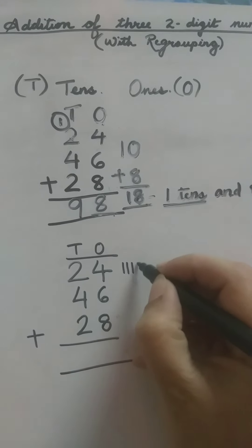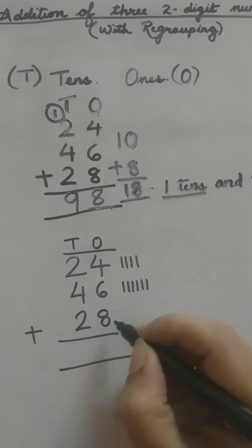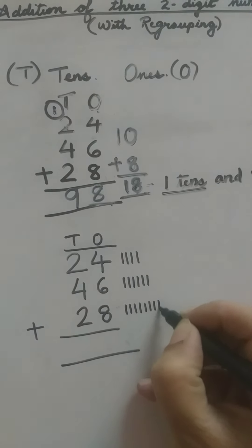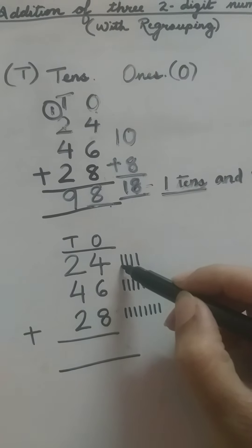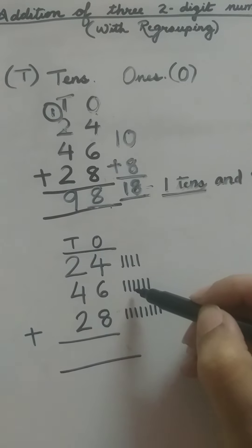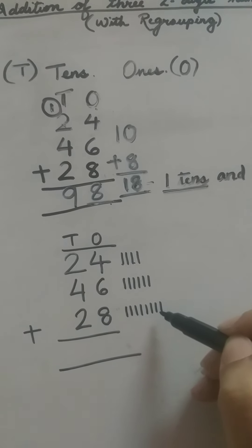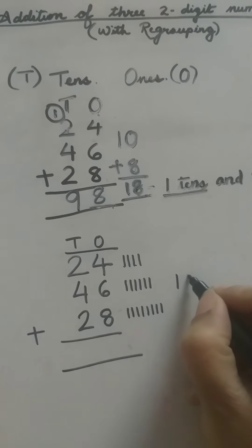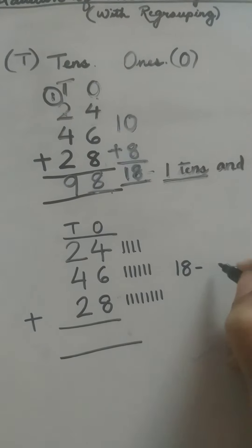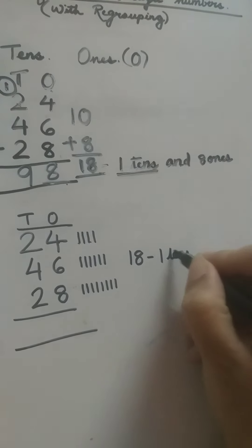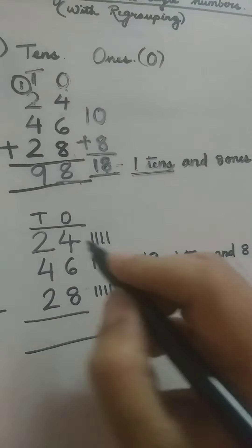Our first number is four, so we will draw four lines. Our second number is six, so we will draw six lines. Our third number is eight, so we are going to draw eight lines. Now we are going to count all the lines together: one, two, three, four, five, six, seven, eight, nine, ten, eleven, twelve, thirteen, fourteen, fifteen, sixteen, seventeen, eighteen — their total is 18. As we know, we cannot write a two-digit number in the ones place, and this number 18 has one ten and eight ones.